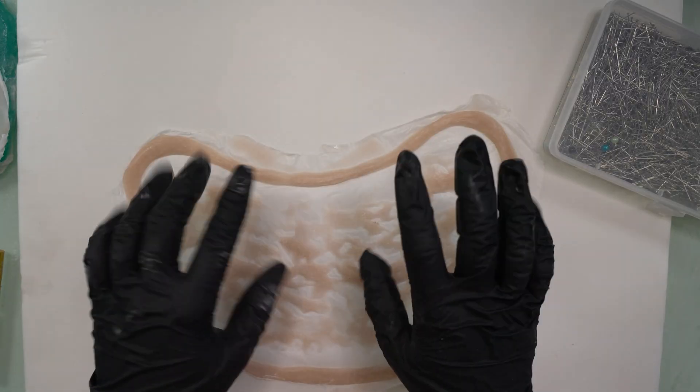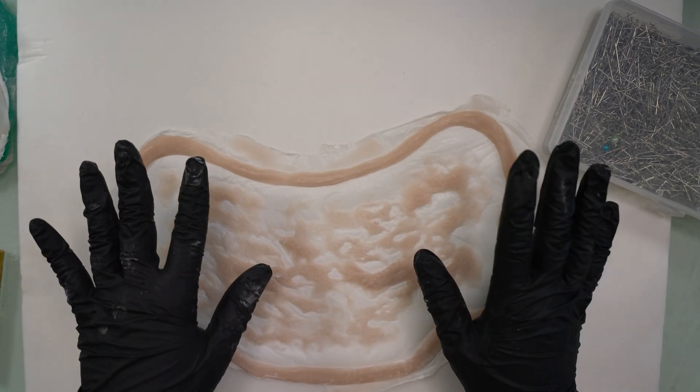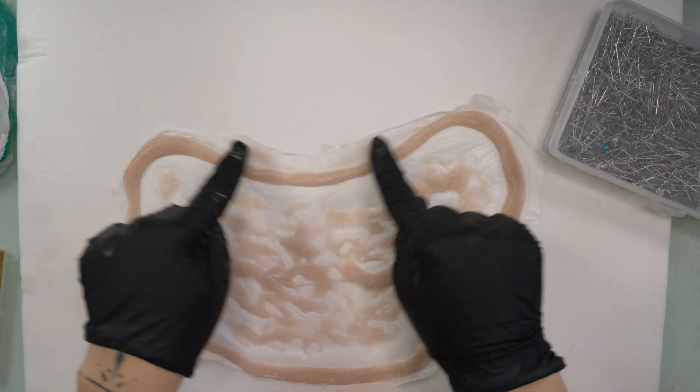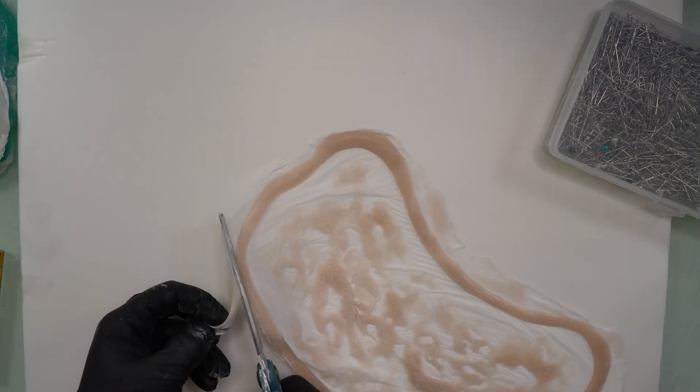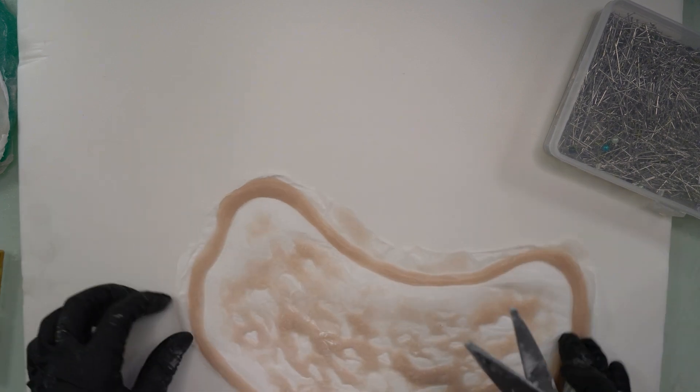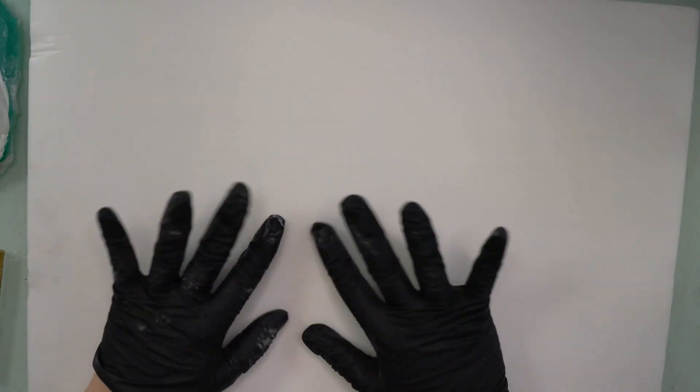I recommend using a respirator even while doing this if possible. And then you can go ahead and trim all the edges around the prosthetic. You can use scissors for this but mine never really work so I've resorted to a rotary razor or like a fabric cutter and it works so much better than scissors.